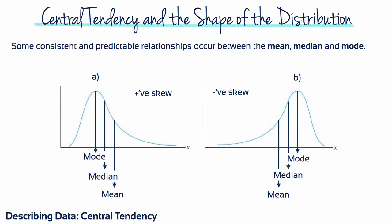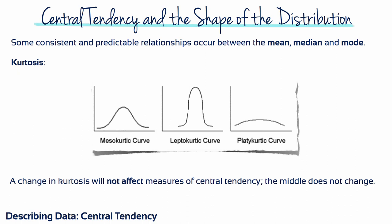Negatively skewed distributions are lopsided in the opposite direction. Therefore, the measures are also ordered in the opposite direction. Changes in kurtosis have no effect on measures of central tendency.